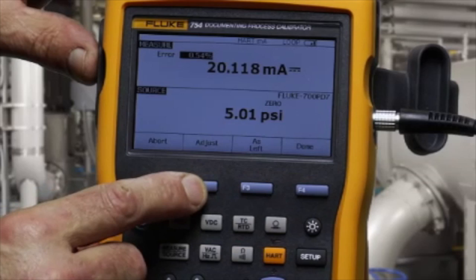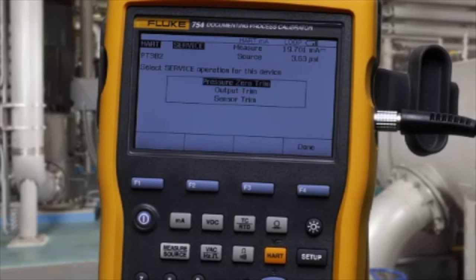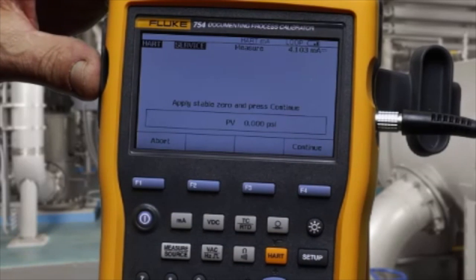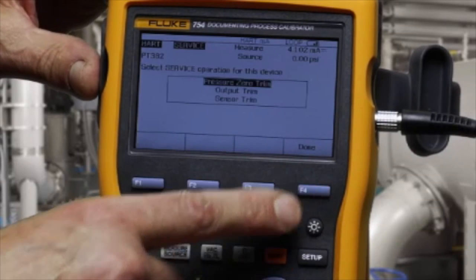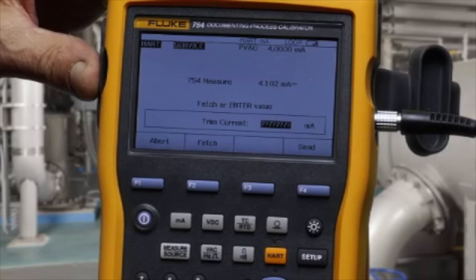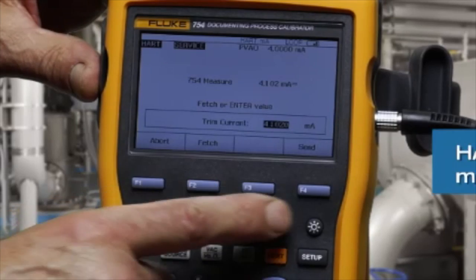Next select adjust and first perform a pressure zero trim with the pump vented to atmosphere. And then an output trim where we trim the milliamp output by fetching a four milliamp value as measured and send the trim to adjust.